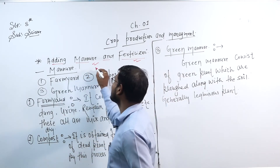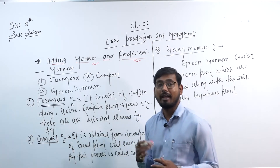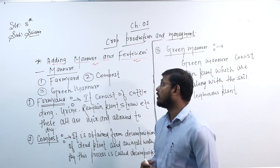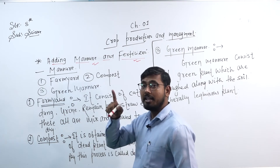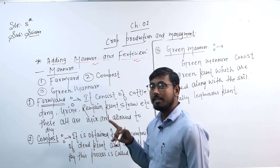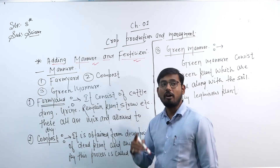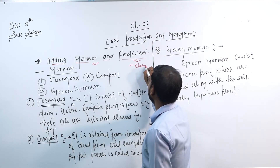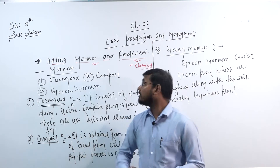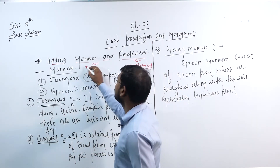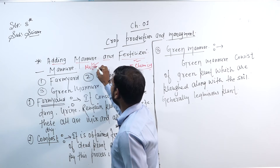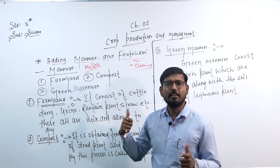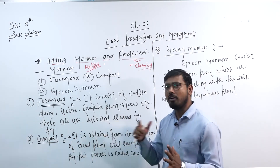First of all, this concept is important: manure is organic. What is the meaning of organic? It means which is obtained from nature. So manure is organic — it is obtained from nature. Fertilizers are inorganic. What is the meaning of inorganic? It means which is made from chemicals. So manure comes from nature and fertilizers come from chemicals. This is the organic and inorganic concept.